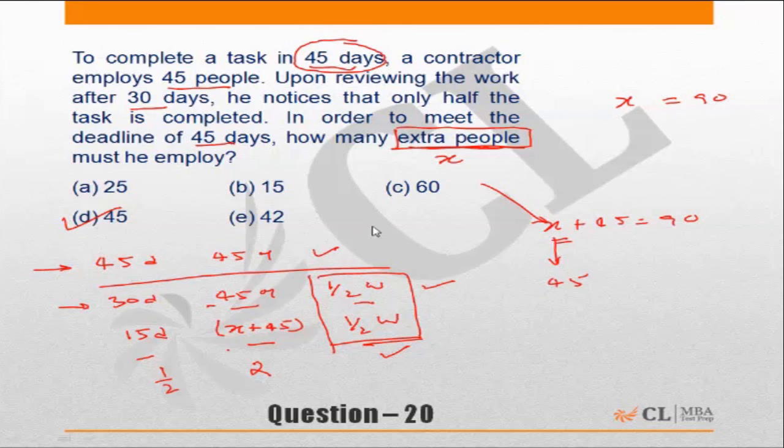Fortunately, the choice 90 is not there, but if there was a choice called 90, I am sure many people would have marked that as the answer. To ensure you don't make that mistake, always let the variable or the x be what the question wants you to find.